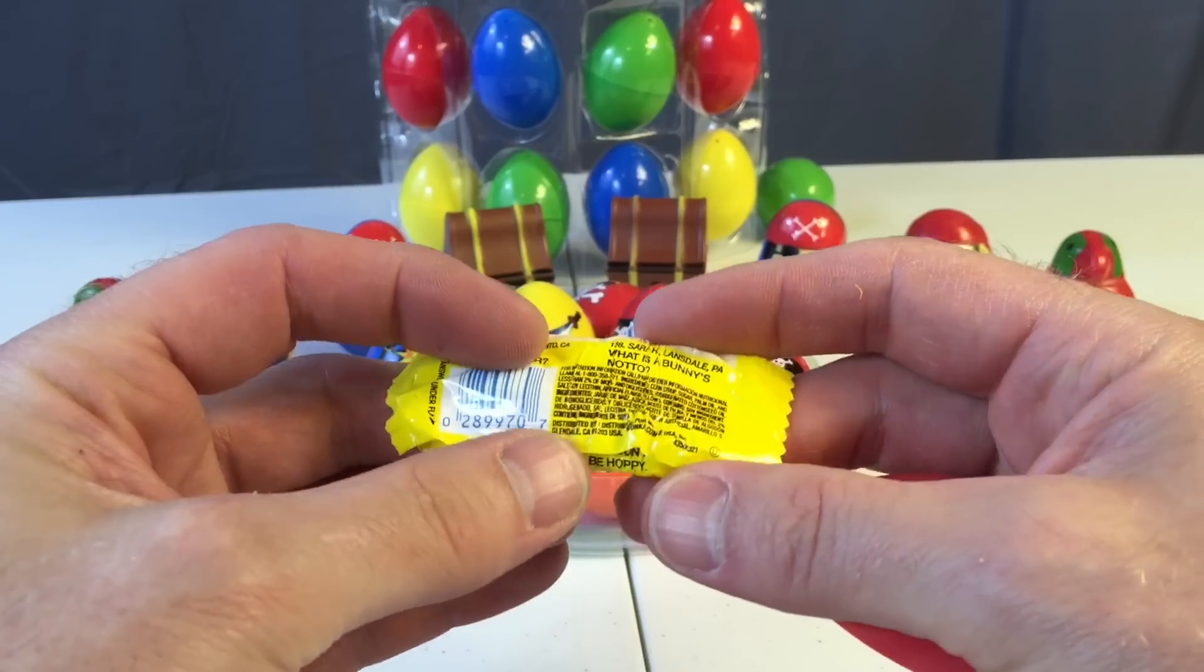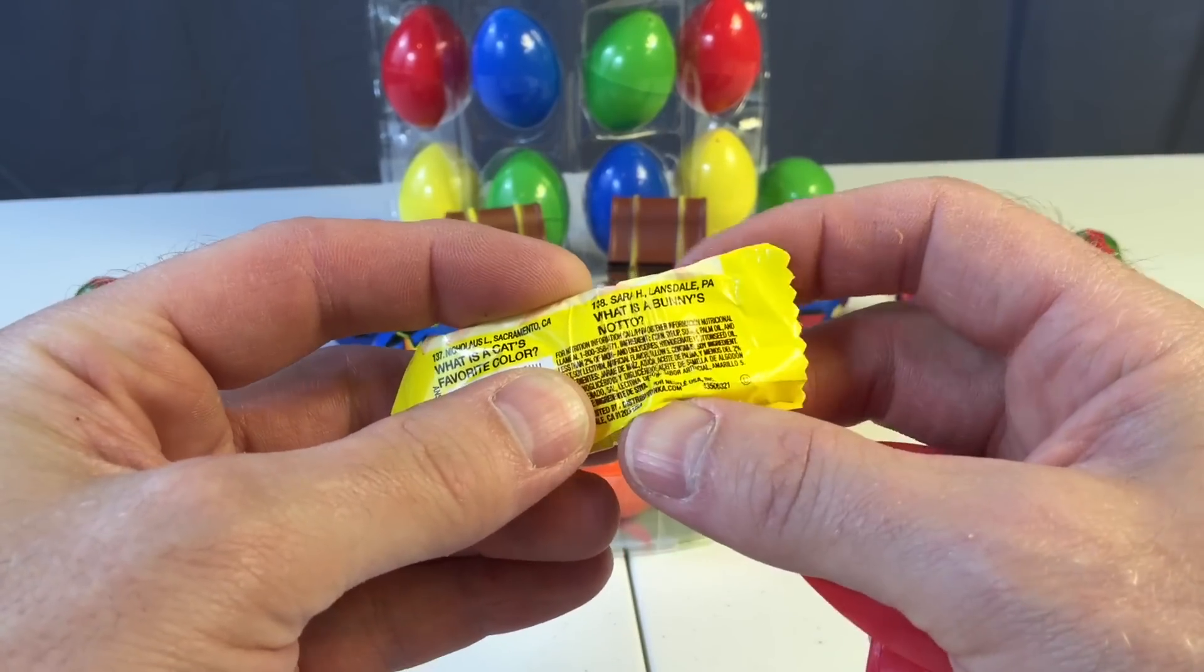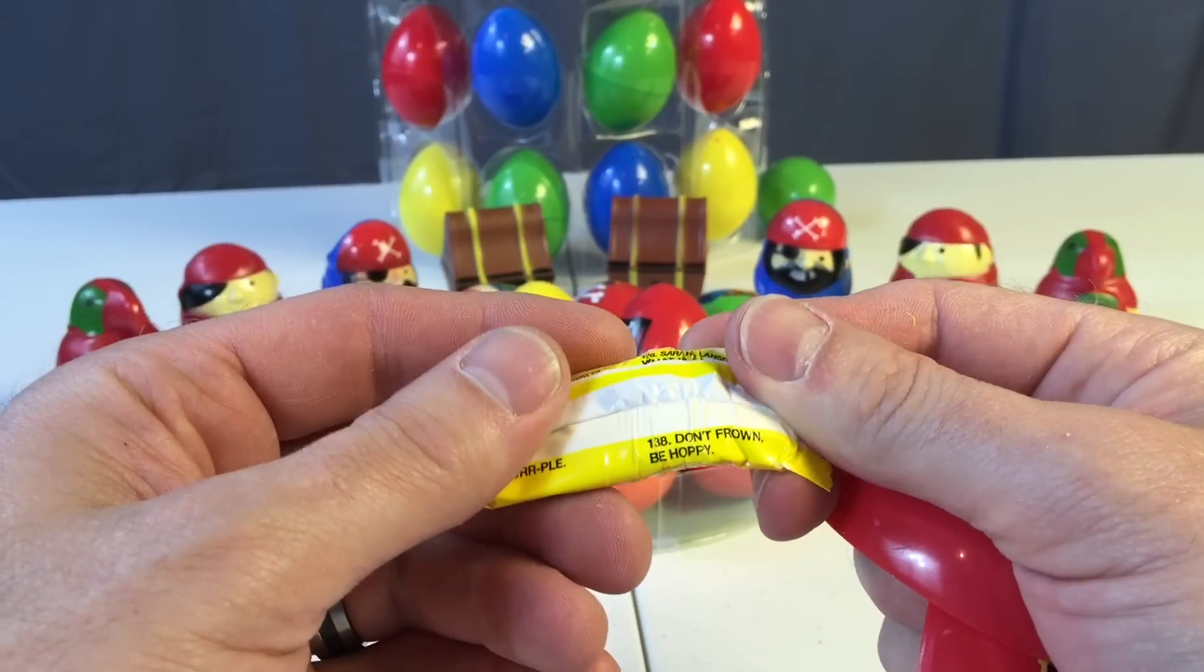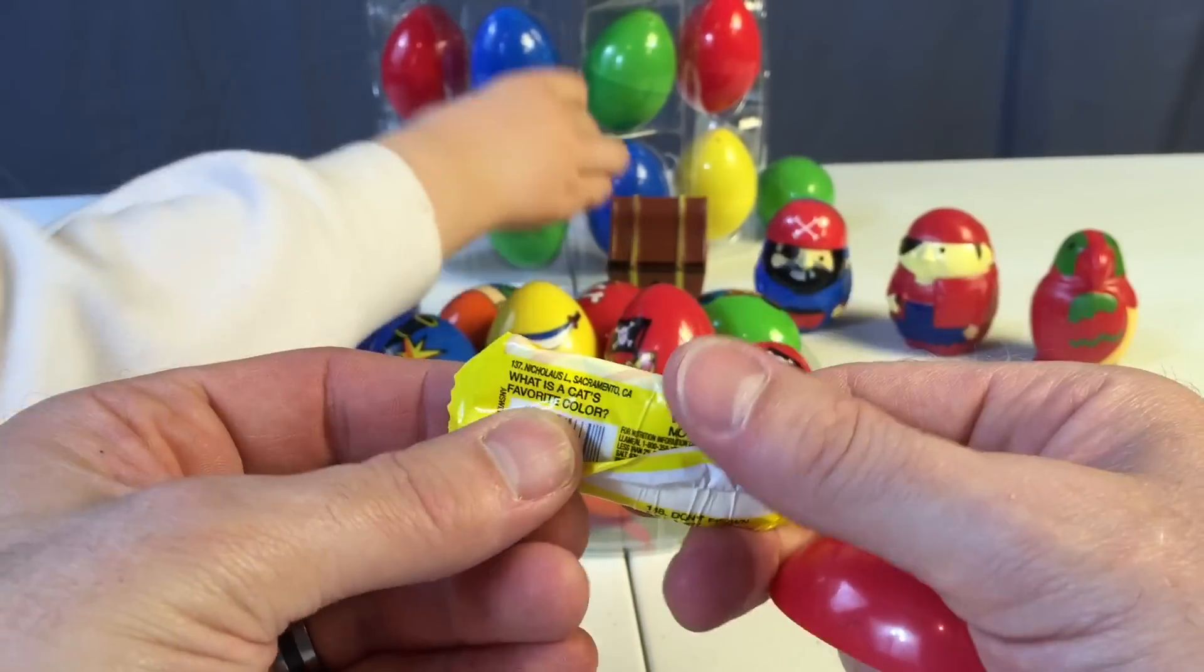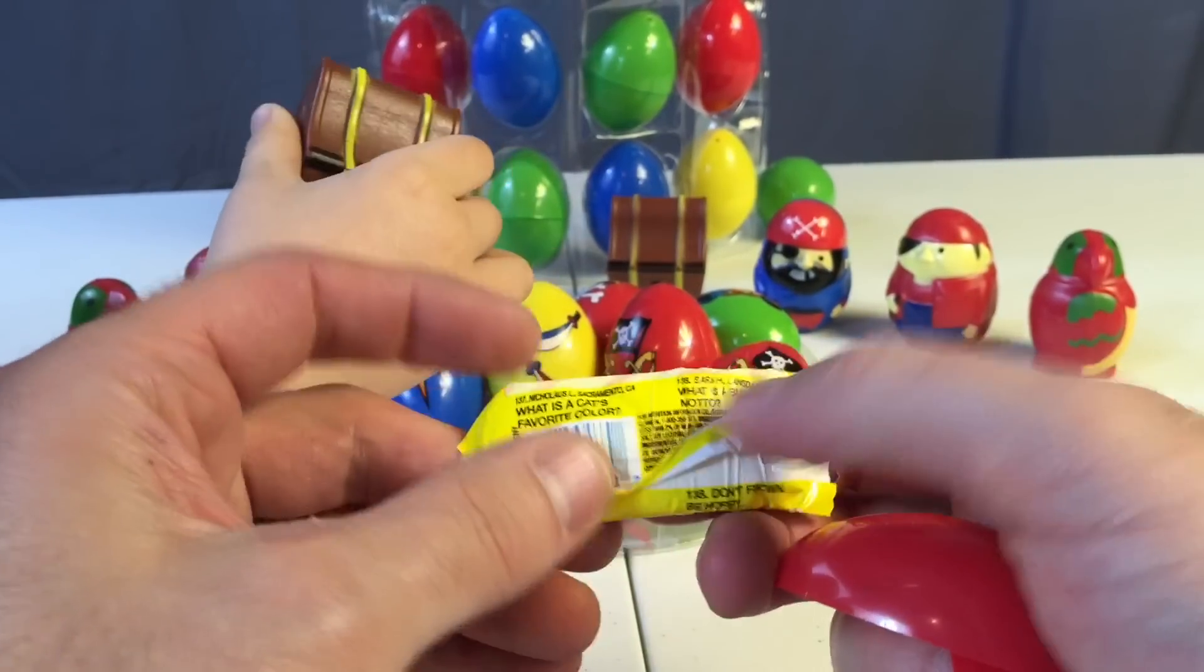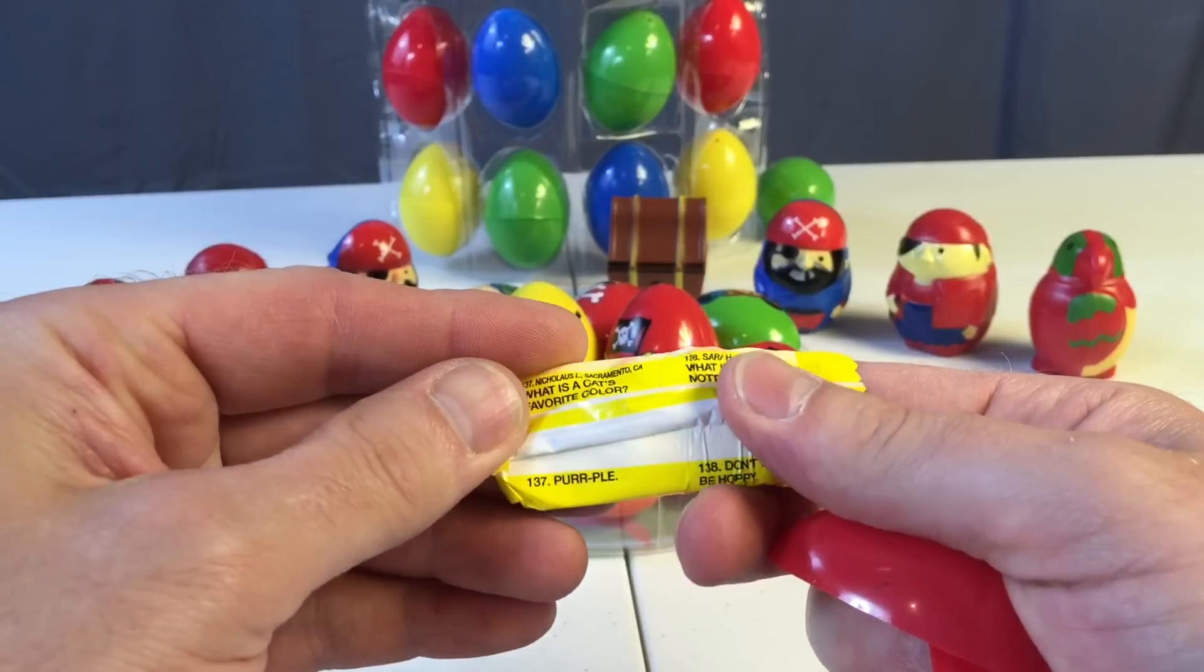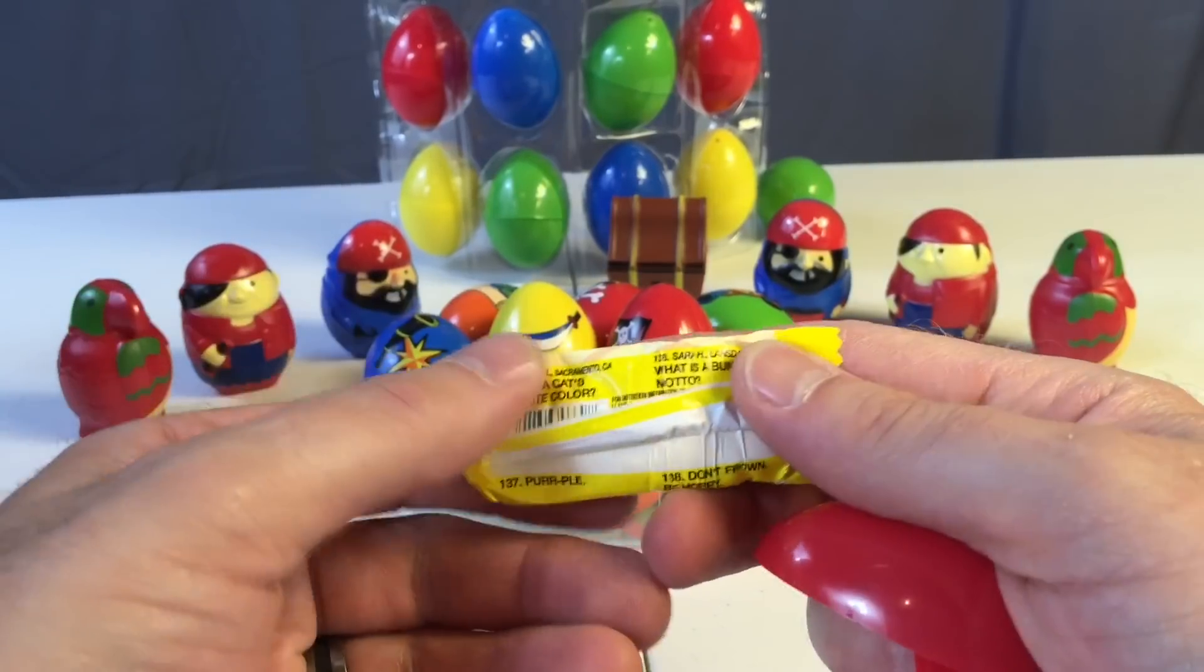What is a bunny's motto? Don't frown, be hoppy. Oh I get it, because the bunny hops. What is a cat's favorite color? Purple. Oh yeah, I get it, because the cat goes purr.